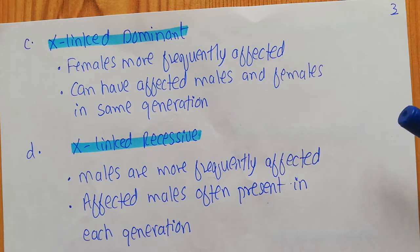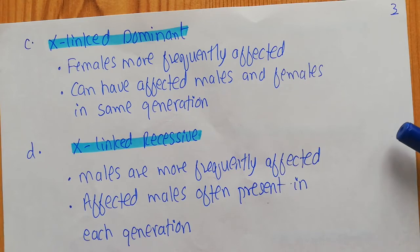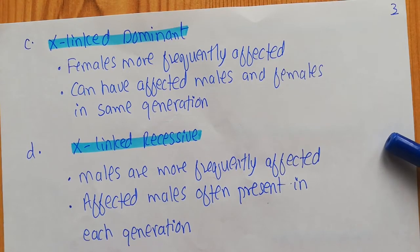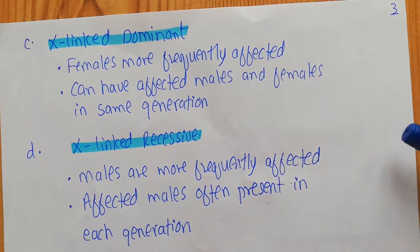For males, they only receive their X chromosome from their mother. So if their mother is affected, there is a chance that the male will express that particular disease. Because males have only one X chromosome, their chances of getting an X-linked dominant disease decrease by 50% compared to females.